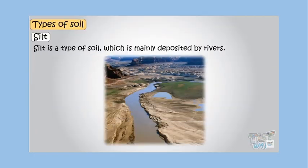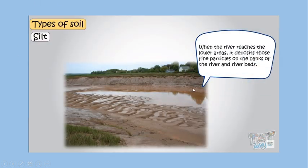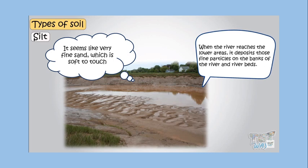Silt is a type of soil mainly deposited by rivers. When a river flows down a mountain, it carries weathered and broken rock particles from the mountain. When the river reaches the lower areas, it deposits those fine particles on the banks and riverbeds. That is why we can find silt soil — it is like very fine sand, soft to the touch.